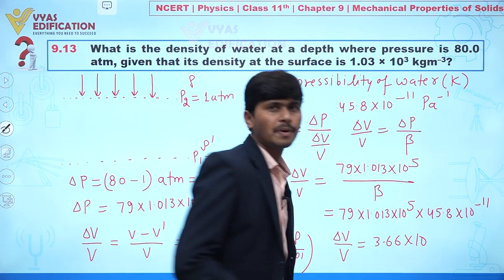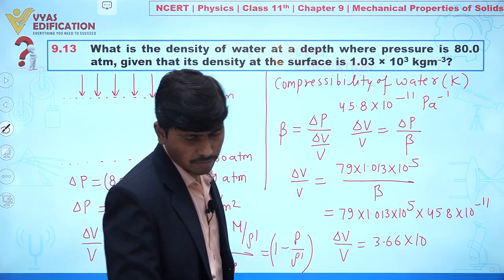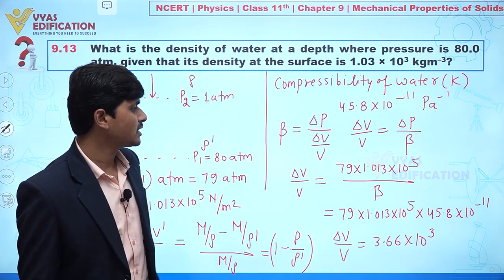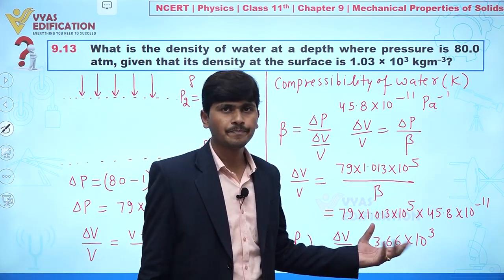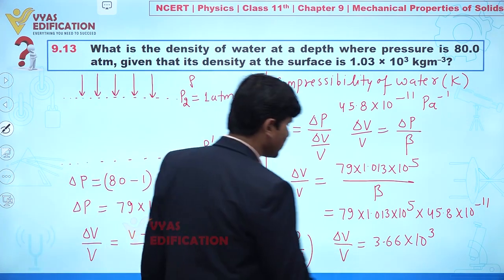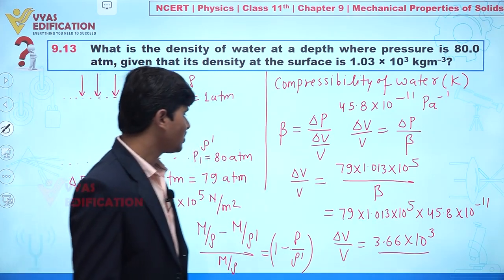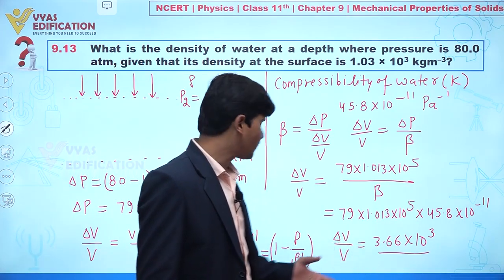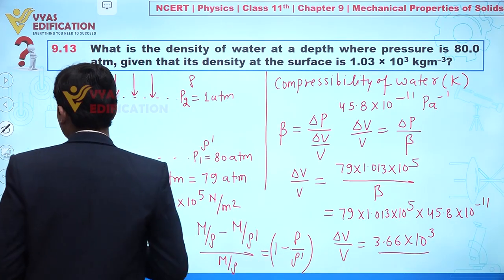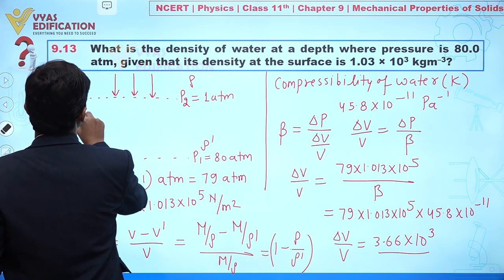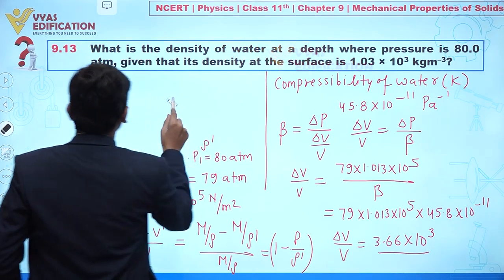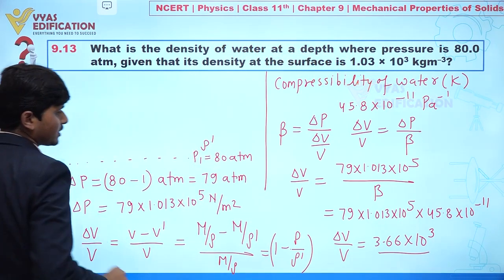The fractional change in volume works out to 3.66 × 10⁻³. Now we established that ΔV/V = 1 − ρ/ρ', so 3.66 × 10⁻³ = 1 − ρ/ρ'.